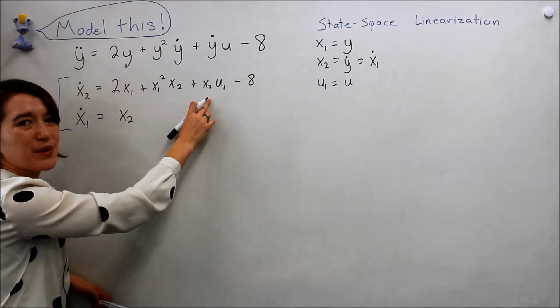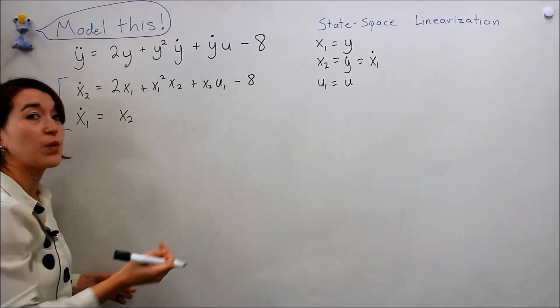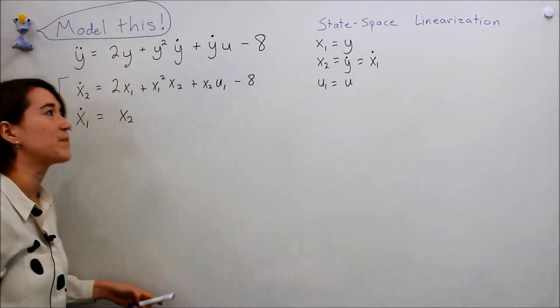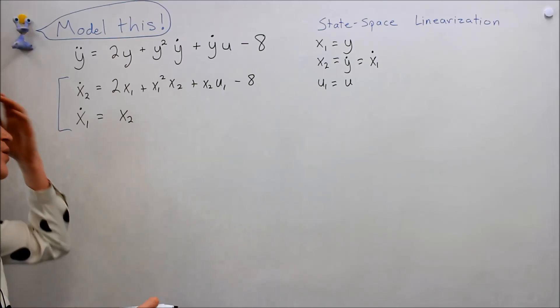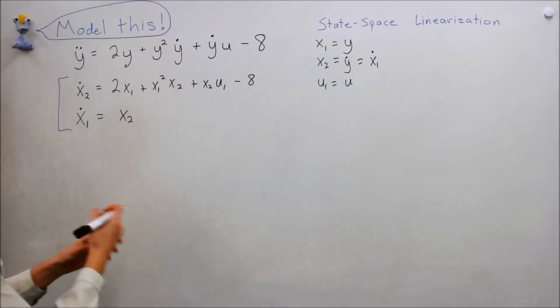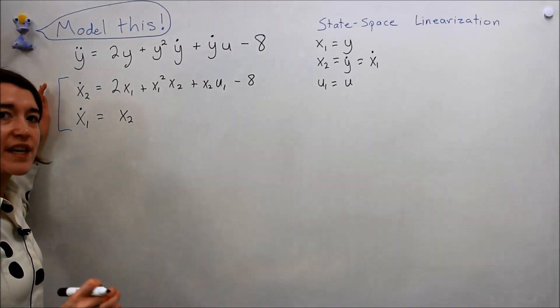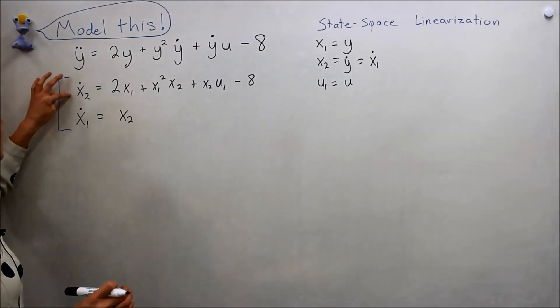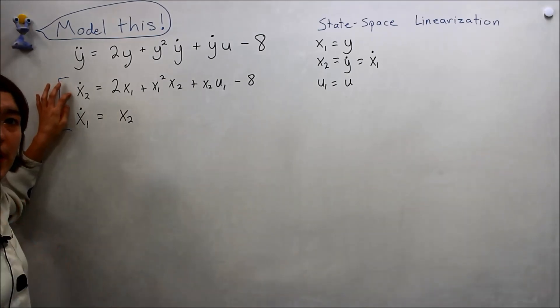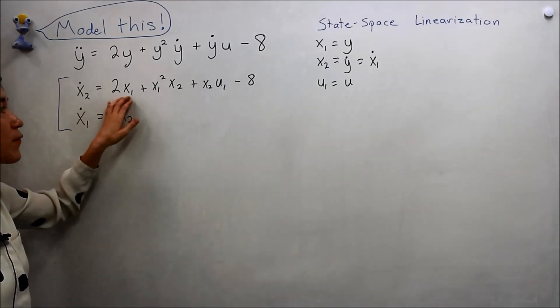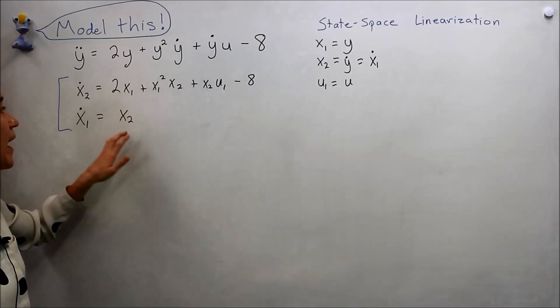So what can we do to get rid of those? We can linearize our system. When we linearize, the first thing we have to do is figure out the equilibrium points. With the state space form, it's really nice because we just set our dynamics to zero, and then we can solve for the equilibrium points of x1 and x2.